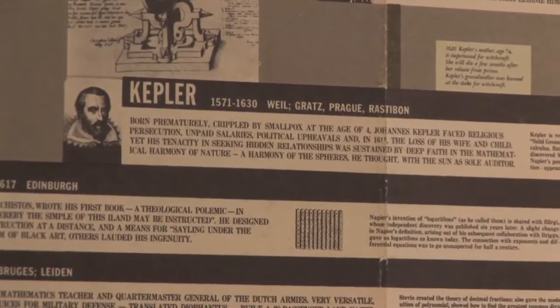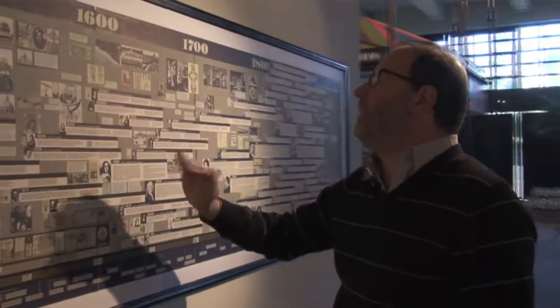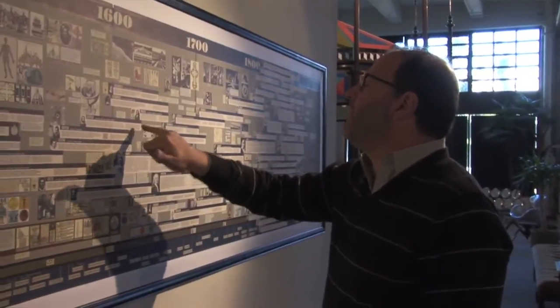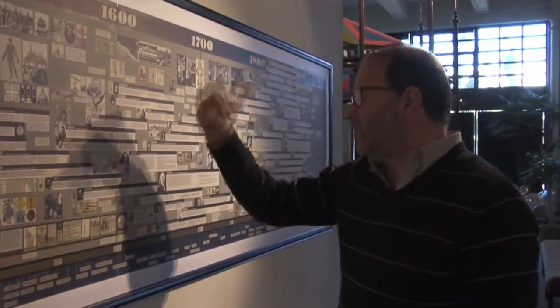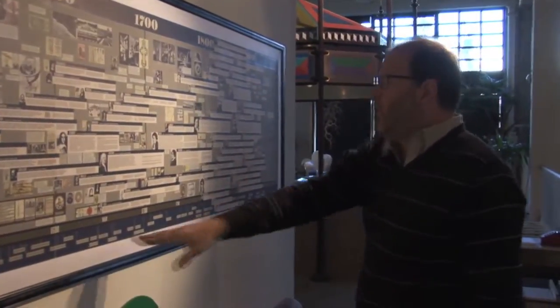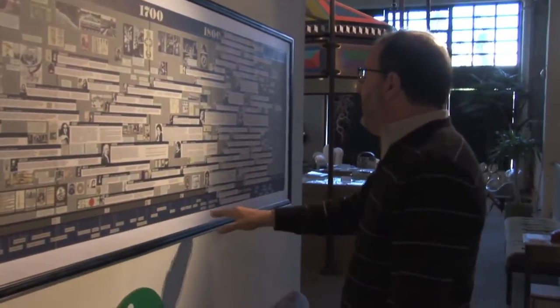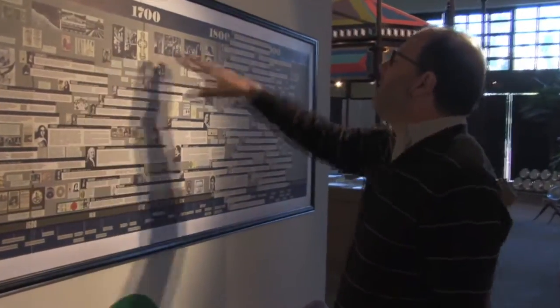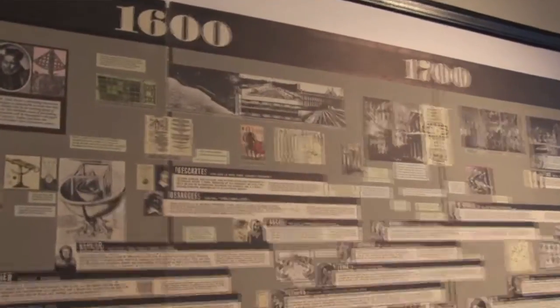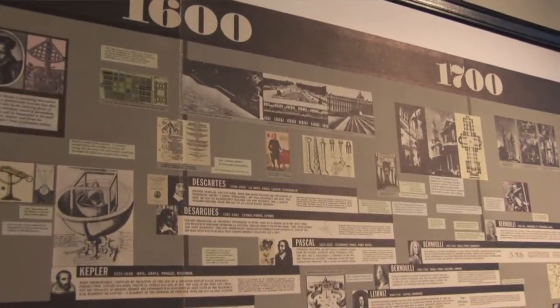Yet his tenacity in seeking hidden relationships was sustained by deep faith in the mathematical harmony of nature. And then, now that the Eames office have hooked people in, we get into the things that Kepler devised as mathematical principles. They also contextualized it with what's happening in history, what's happening in architecture, and what's happening in the arts.